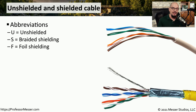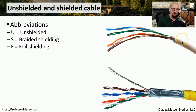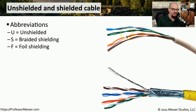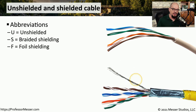When we talk about copper ethernet cabling, we're often referring to either unshielded twisted pair or shielded twisted pair. The unshielded twisted pair cable has no shielding around the four different pairs of cables, but all four pairs are twisted. The shielded cable has a metal shield going around the four pairs, and it also includes a grounding wire that you can use on one side of the connection.